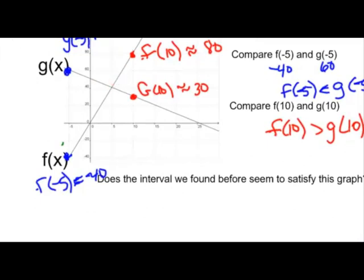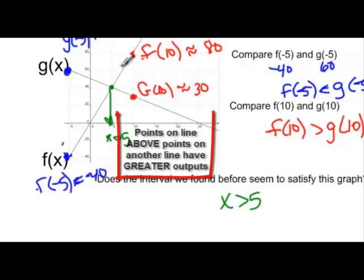Where are they the same? It looks like they're the same right about here where x equals 5. So does the interval we found before seem to satisfy this inequality from the graph? And in our inequality before we said that x had to be greater than 5. And you can see that over here where x is greater than 5 to the right of 5 on the x axis. If I go to my graph, all the points on my f graph are above the ones on my g graph. So yes, it satisfies.